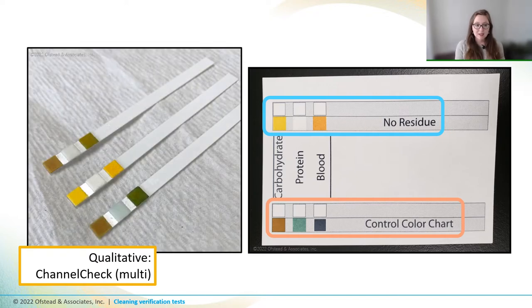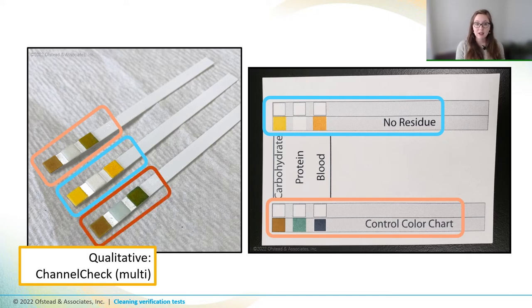As you can see, when we tested samples, the middle strip wasn't dunked at all, so it had no residue, while the top strip detected carbohydrates and blood but no protein. Can you see how that middle test pad is still white? And finally, the bottom test strip strongly detected all three, showing that there was a lot of soil present.